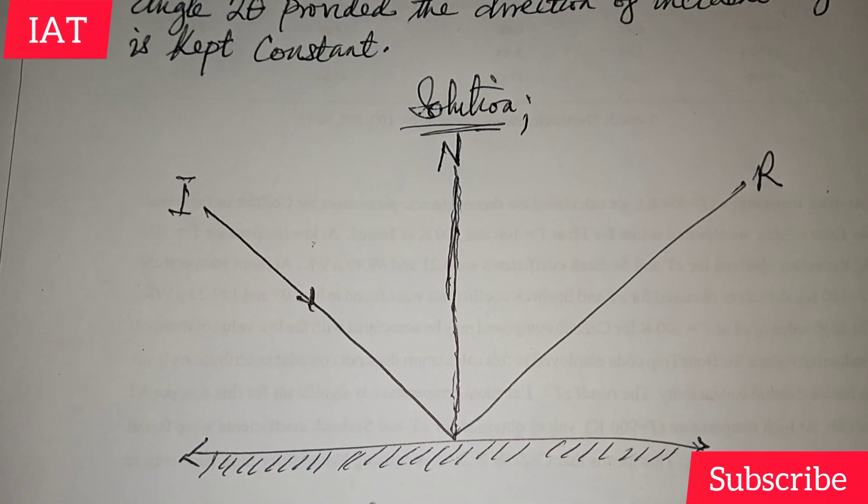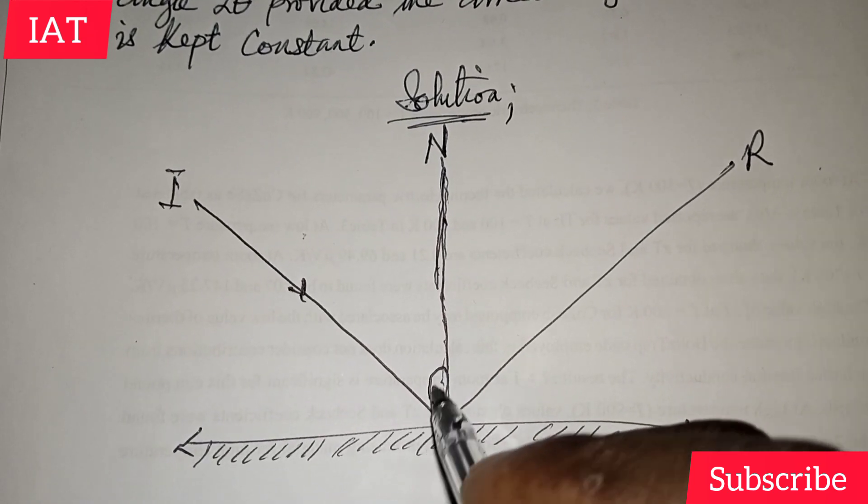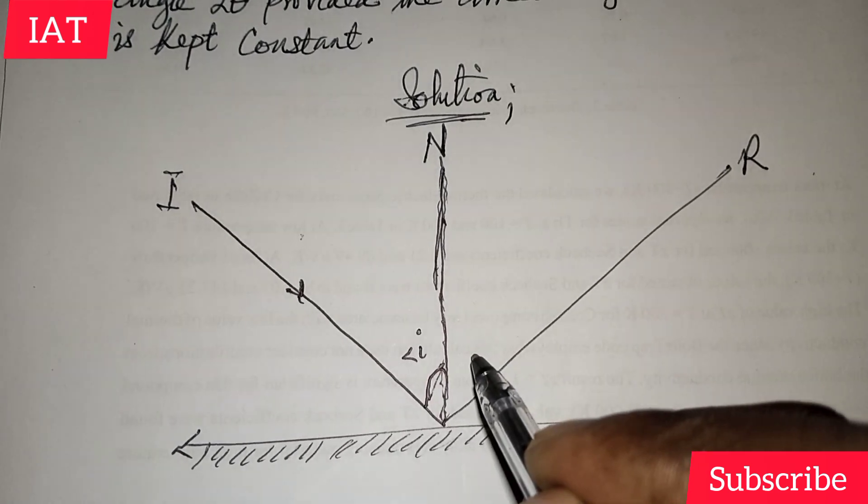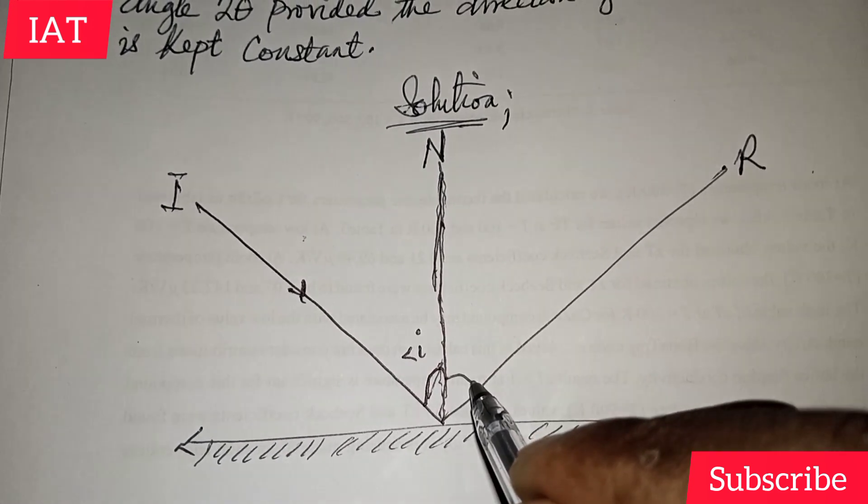Alright, so outside of that, we know that this point is the angle of incident, and this other is the reflected angle.